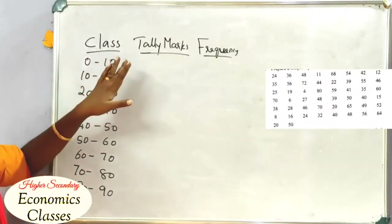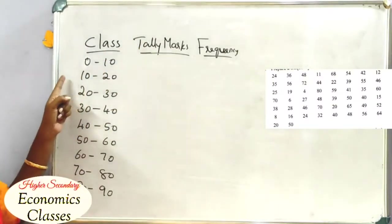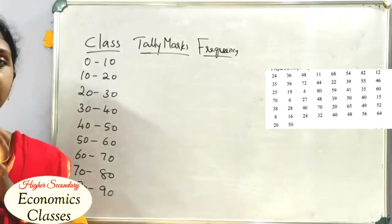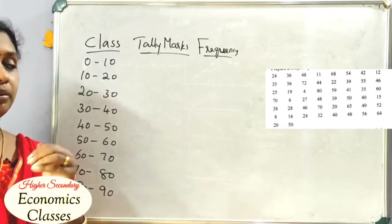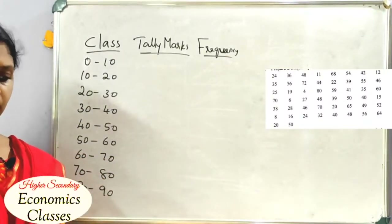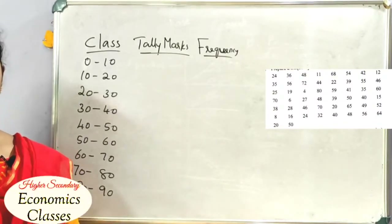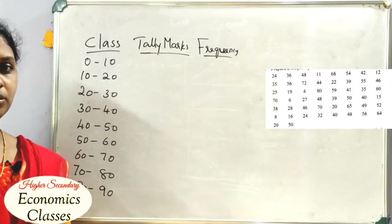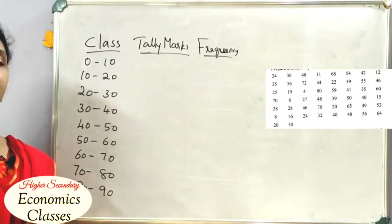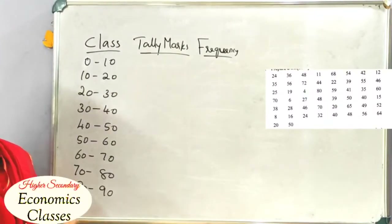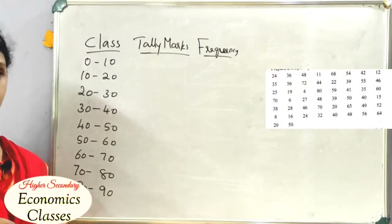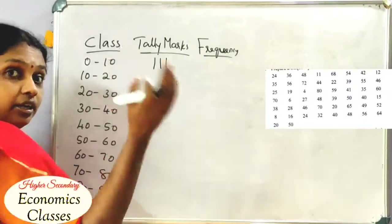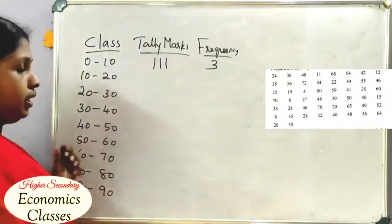In the 0–10 class, values 0 to 9 are included. We mark the tally for each value as we go through the data. In the 0–10 class, there are 3 marks, so we put 3 tally lines and the frequency is 3.